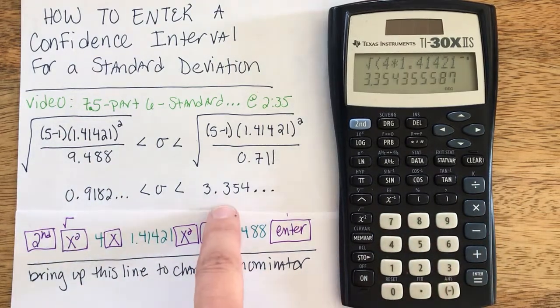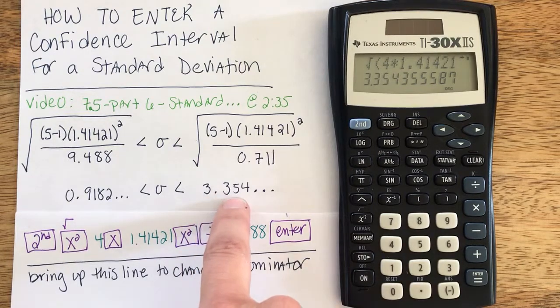I'm just going to go ahead and hit enter, and I get my upper bound of 3.35.